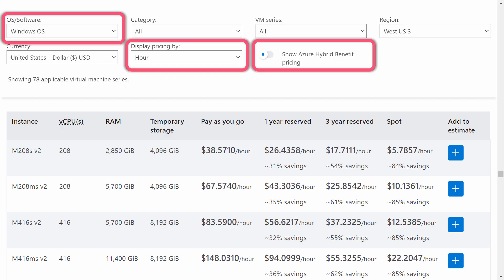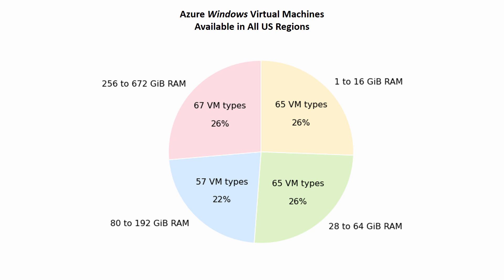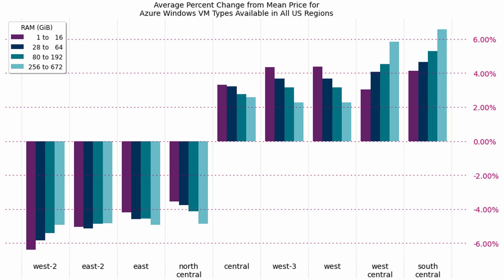The last thing I did was to see if the pricing pattern for Windows VMs is similar to the Linux pattern. I considered the non-hybrid pay-as-you-go hourly prices. I divided the 254 Windows VMs available in all nine regions into four groups based on RAM size. And here's what the pricing pattern chart looks like for Windows VMs. The four less expensive regions for Windows are the same as for Linux: West 2, East 2, East, and North Central. The biggest difference is that there is less price variability for Windows VMs — the extreme averages touch the 6% and negative 6% lines here, whereas on the Linux chart the extreme lines were at 10% and negative 10%.